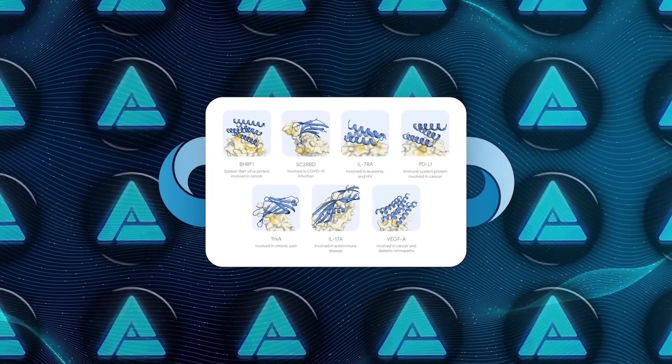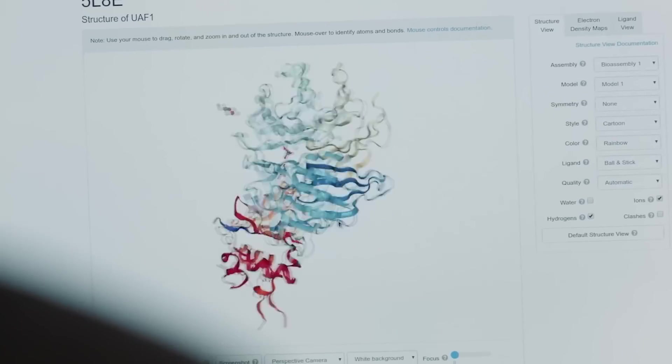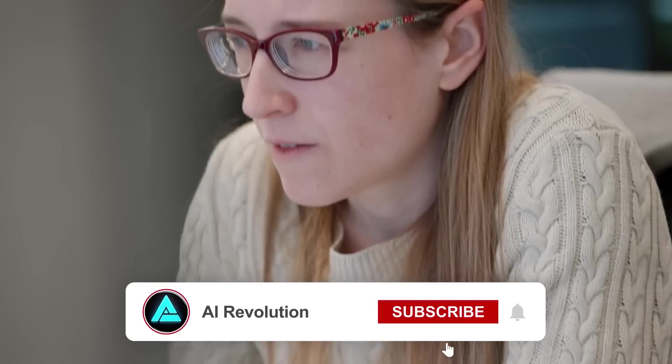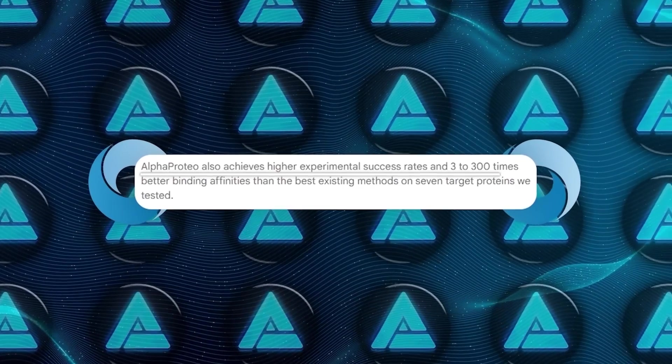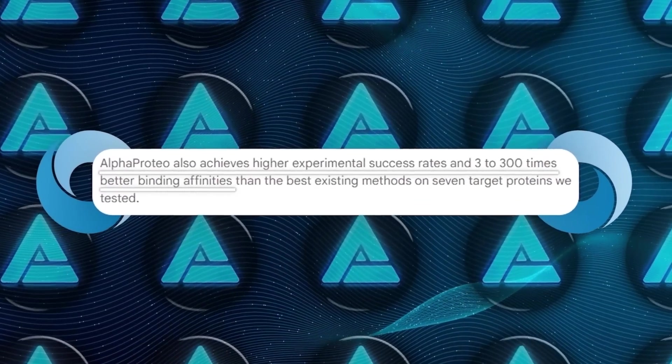In fact, AlphaProteo generated binders for seven different target proteins. And here's the kicker. They tested these proteins in the lab and the AI-designed binders worked like a charm. I'm talking about 3 to 300 times better binding strengths than the best existing methods. Insane, right?